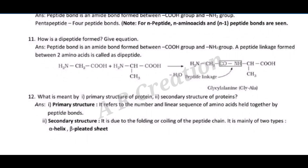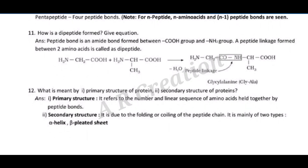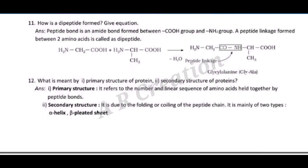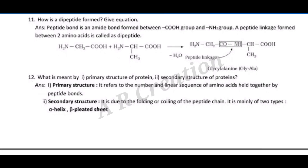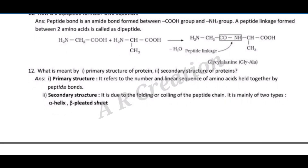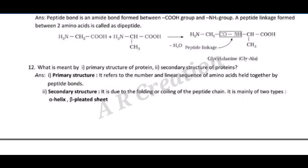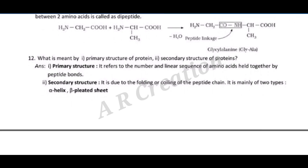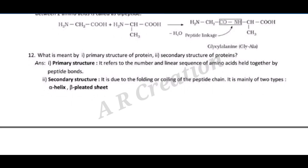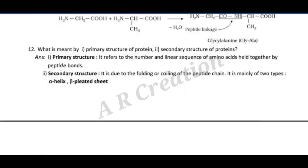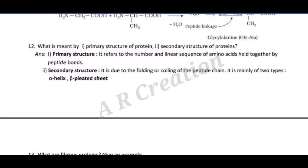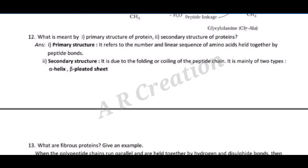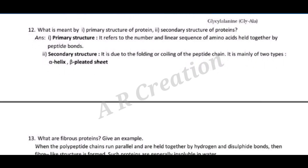Question twelve: what is meant by (i) primary structure of protein and (ii) secondary structure of proteins? Answer: (i) Primary structure refers to the number and linear sequence of amino acids held together by peptide bonds. (ii) Secondary structure is due to the folding or coiling of the peptide chain.